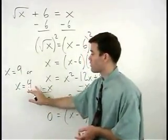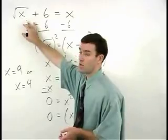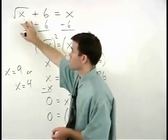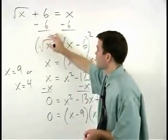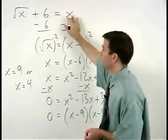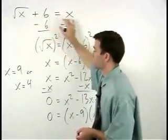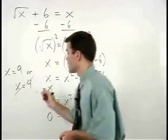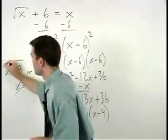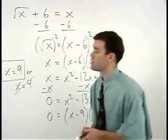But notice that when we plug a 4 back in for x in the original equation we have the square root of 4 which is 2 plus 6 equals 4. And 2 plus 6 does not equal 4. So 4 cannot be a solution. And our answer is only x equals 9.